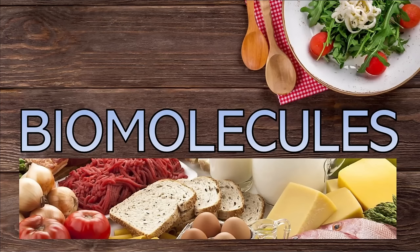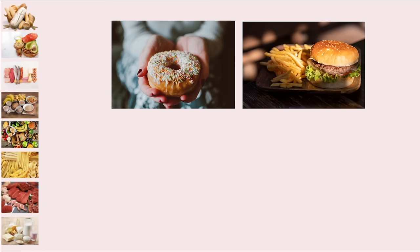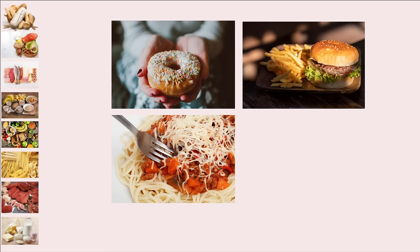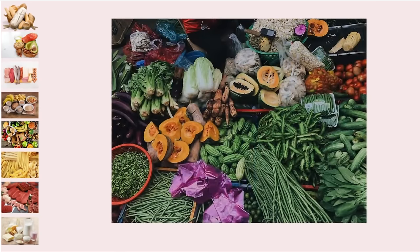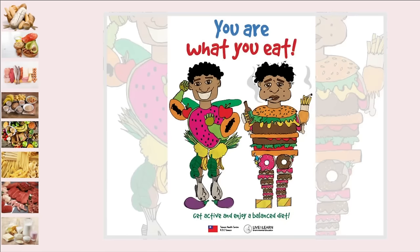Now, why does our cover screen show various foods? Because food is a source of these biomolecules — large molecules needed for life. What's your favorite food? Donuts? Burgers? Fries? Pasta? Chicken? Samgyopsal? Or fruits and vegetables? According to one saying, you are what you eat. So whatever you eat, it contributes to your health. I'm not here to lecture you on what to eat and what not to eat, but I'm here to tell you what the benefits are of eating certain kinds of food, because we will be classifying food according to the biomolecules that you can get from them.